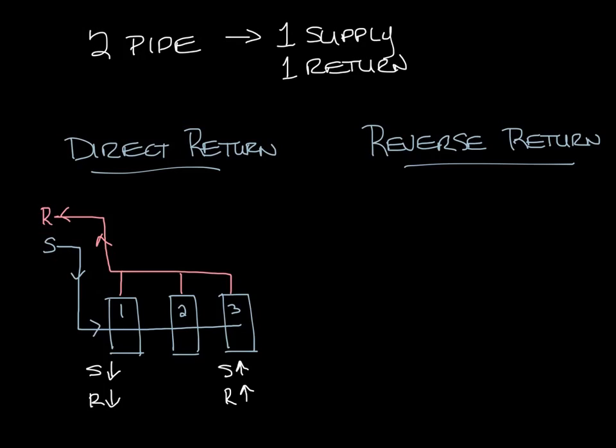So looking at this you can see that the loss going through the first unit through the supply and into the return is going to be the lowest. So during low flow conditions most of the water will want to go through the first unit.